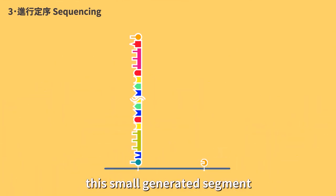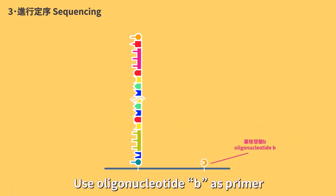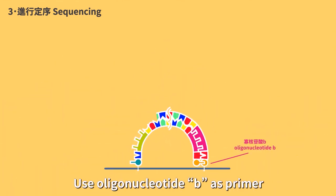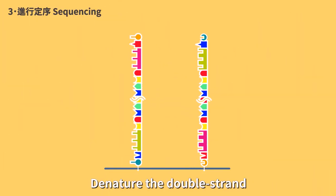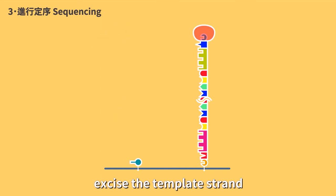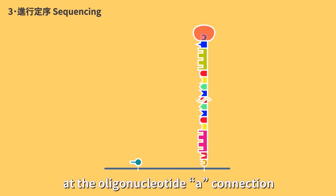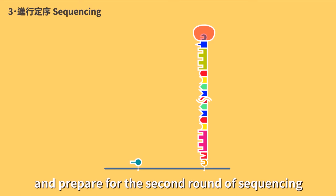Denature again and excise this small generated segment. Use oligonucleotide B as primer to elongate a complete strand. Denature the double strand, protect the 3' end, excise the template strand at the oligonucleotide A connection, and prepare for the second round of sequencing.